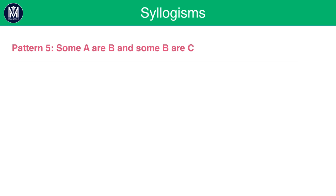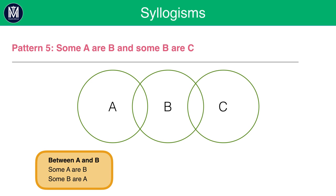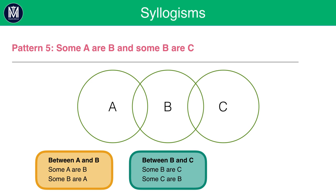Pattern 5: 'Some A are B and some B are C.' Draw a Venn diagram: A and B overlap, and B and C also overlap, with A and C on opposite ends. Between A and B: some A are B, some B are A, some A are not B, some B are not A. Between B and C: some B are C, some C are B — and by the same logic, some B are not C and some C are not B.